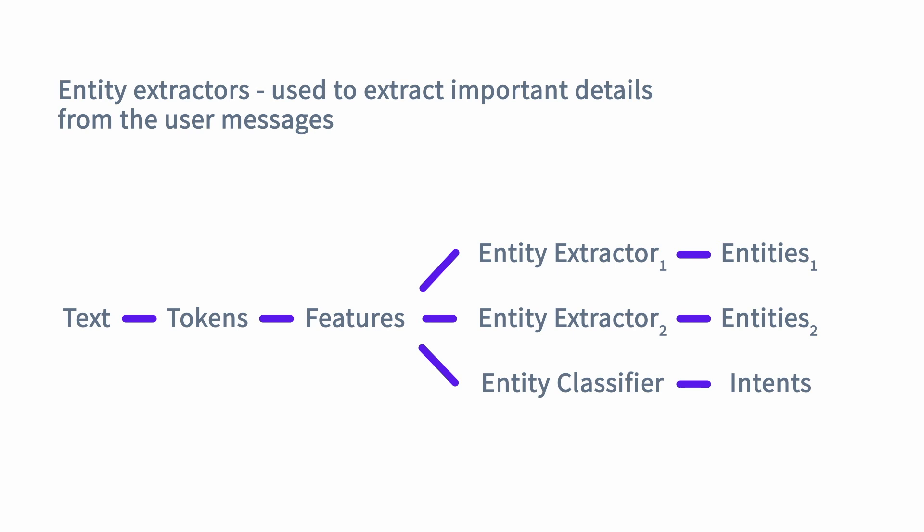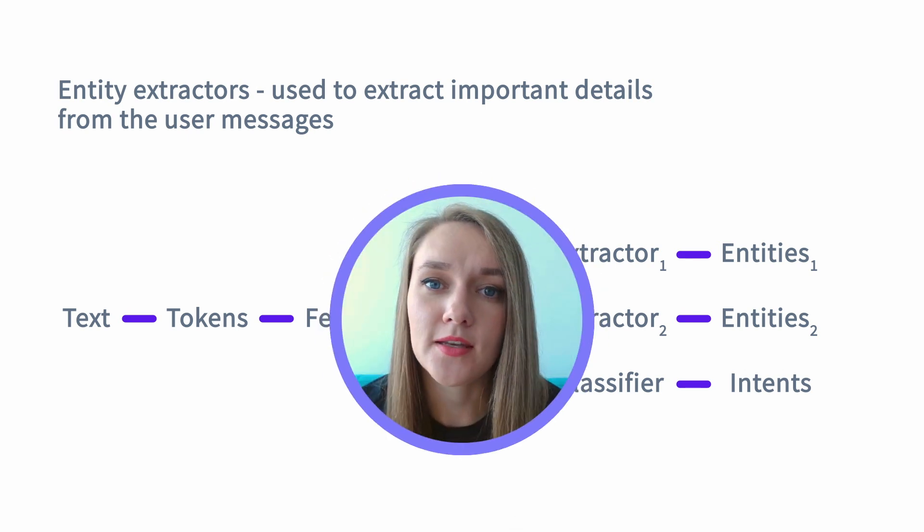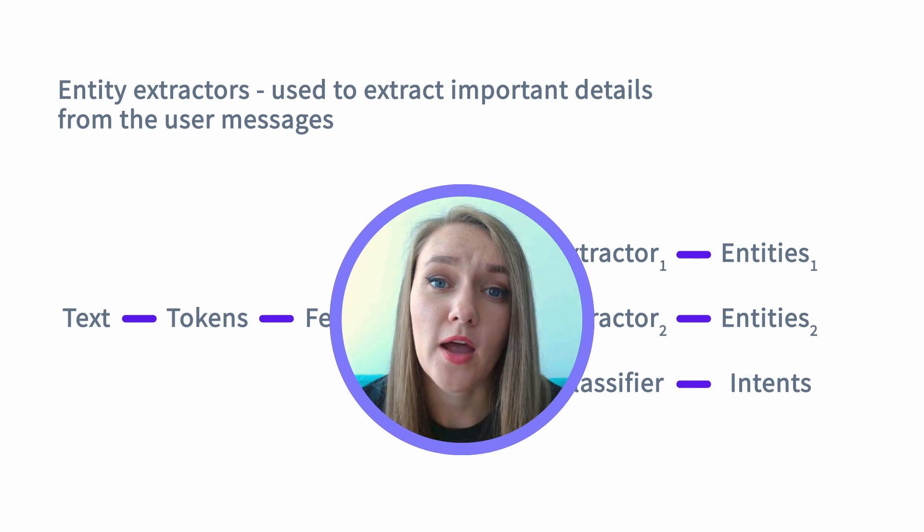You can also define entity extractors to extract entities from user inputs, and you have a choice from quite a few components. You can use multiple components for entity extraction — for example, you can use the DuckLink entity extractor to extract entities like numbers and dates, and then use the DIET classifier to extract other types of entities. If you don't find the components you need among those available in Rasa open source, you can also create custom components and add them to your assistant. To learn how to do that, check out Rasa documentation or other tutorials available on the Rasa blog or YouTube channel.